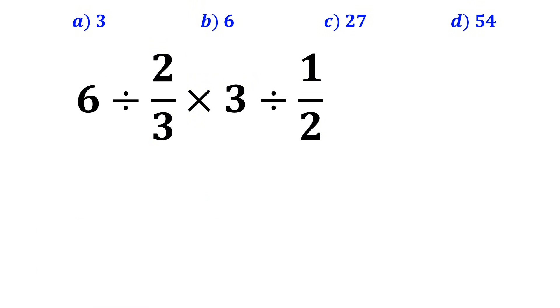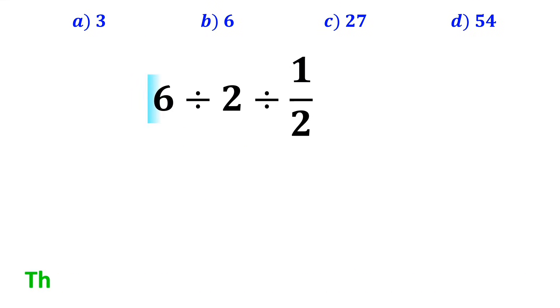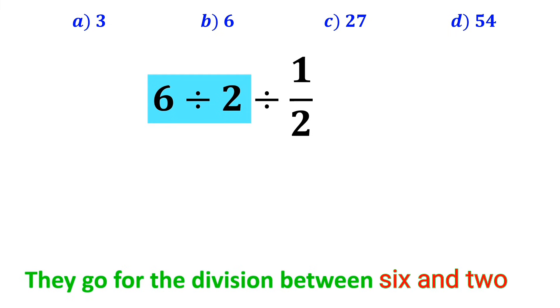In the first step, many people go straight to the expression 2 over 3 times 3, because they think multiplication has priority over division. And they tend to cancel out the 3s. So this expression simplifies to 6 divided by 2 divided by 1 over 2. In the next step, they go for the division between 6 and 2, and rewrite this expression as 3 divided by 1 over 2, which gives them the answer 6.